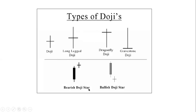We have a bearish doji star. When you see this in an uptrend — price is going up and then a doji forms — it means there is a war, a battle between the buyers and the sellers with no significant winner. With this kind of doji, you wait for a confirmation, which is most likely a bearish confirmation. When you see a bearish confirmation closing below this doji, it tells you that the sellers might take control of the market. We also have a bullish doji star — price is coming down, then a doji is formed meaning no winner, and then we expect a bullish candlestick to form before price starts going up.